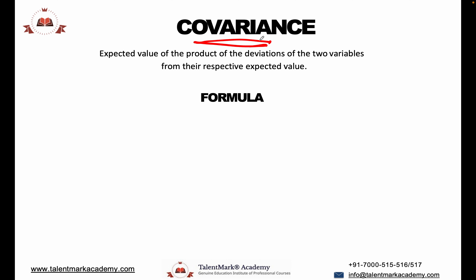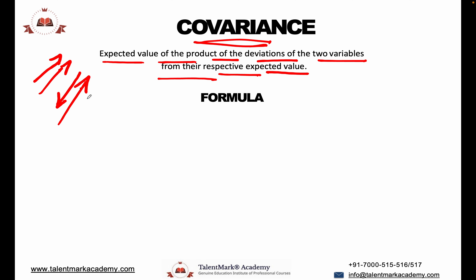Covariance. Covariance is the expected value of the product of the deviations of two variables from their respective expected values. It tells us how two assets are moving — whether they are moving together in the same direction, or one is moving up while the other is moving down.